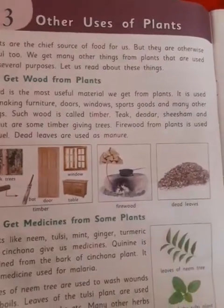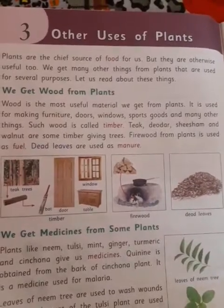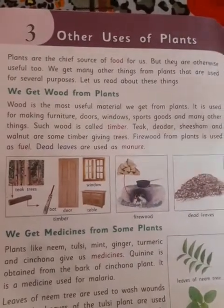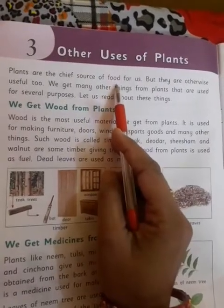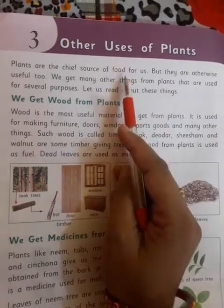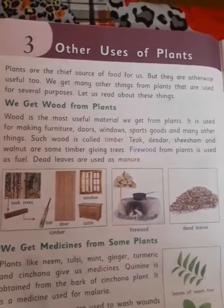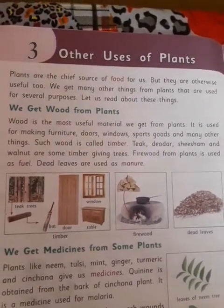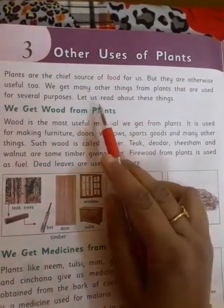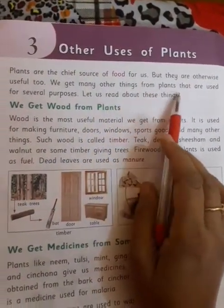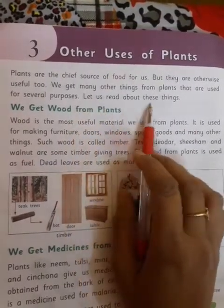Good morning dear students. I will take revision from chapter 3. The name of chapter 3 is 'The Other Uses of Plants.' You know that plants are the cheap sources of food, and we get many other things from plants that are used for several purposes. Let us read about these things.